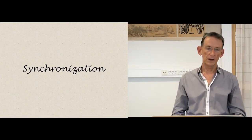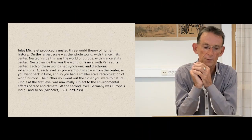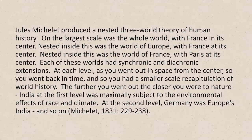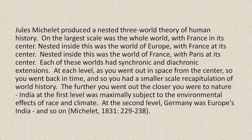One of the early examples of this from the 19th century is the famous historian Jules Michelet, who wrote one of the first universal histories. Michelet produced a nested three-world theory of human history. On a larger scale was the whole world, with France at its center. Nested in this was the world of Europe, with France at its center. Nested inside this was the world of France, with Paris at its center. Each of these worlds had synchronic and diachronic extensions.